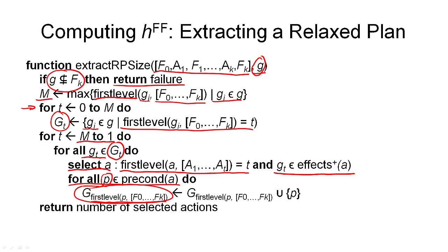This loop terminates when we've reached t equals 1, since f0 corresponds to our initial state. After finishing this loop, all that remains is the final step: we count all the actions in our extracted relaxed plan and return that count as the heuristic value.